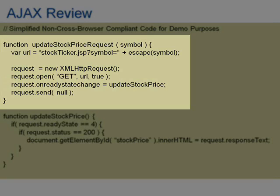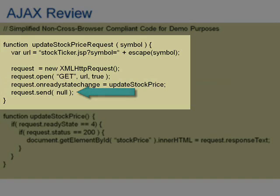The third property we want to change on a request object is to register the name of the callback function we created. You do that by setting a property called onReadyStateChange and passing in the name of that callback function. Finally, we call send on the request. The parameter is null in this case simply because we're doing a GET request. A GET request won't have anything in the body — all parameters are sent in the URL as part of the query string.